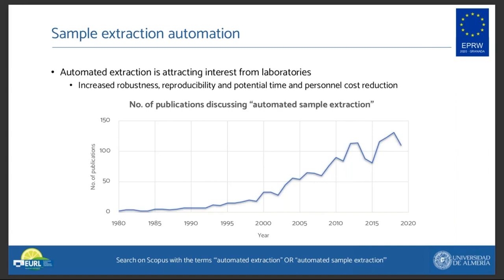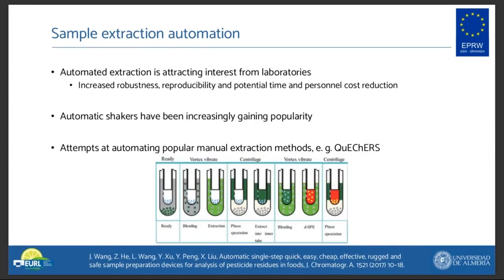The interest in automated extraction within laboratories has garnered more and more interest in recent years. This becomes evident when looking at the graph made with the number of publications that discuss automated sample extraction on Scopus. Increased robustness, reproducibility, and personal and time savings are some of the main desirable benefits. One such example are automatic shakers. In recent years, automatic shakers have gained a foothold in laboratories as an alternative to manual shaking. These instruments offer a wide variety of functions such as shaking, sample shaking and heating, and even sample milling of dry materials.